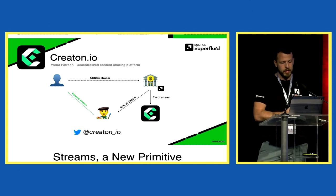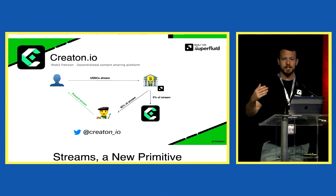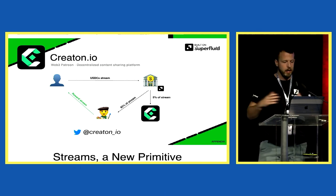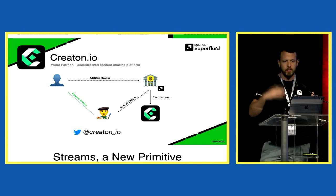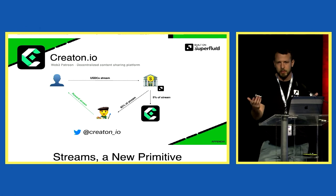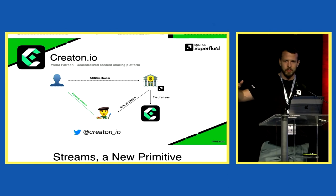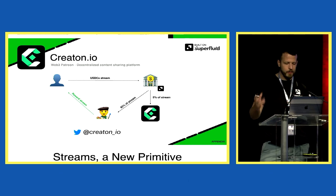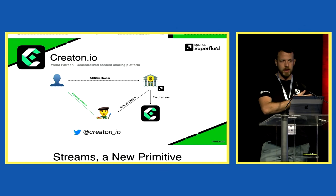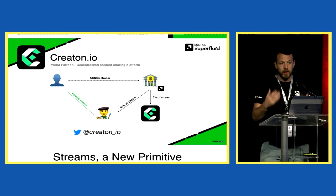Creatin is a great project — it's trying to be a Web3 Patreon. You stream to your creators and in exchange get access to a private feed of content. You couldn't really do this before without some sort of recurring payment, which is terrible UX. As a user, you go to their application, send one stream, get access to the content, and when you're done, close that stream. They take a cut, and allow the artist to send some funds in a stream back to the user. Everything you see in the slide happens in one transaction — a great user experience.